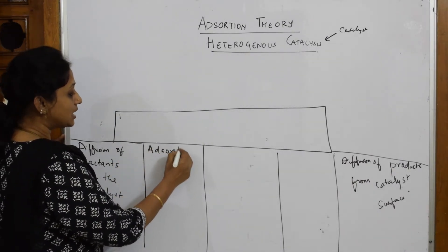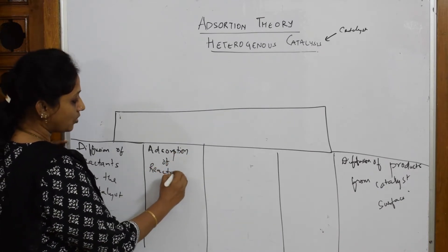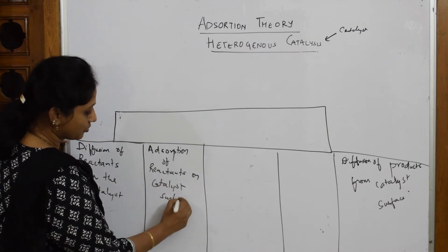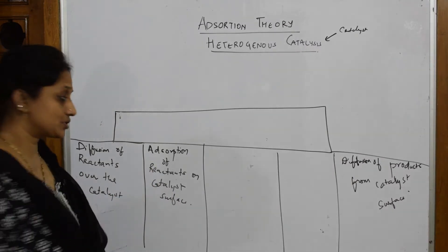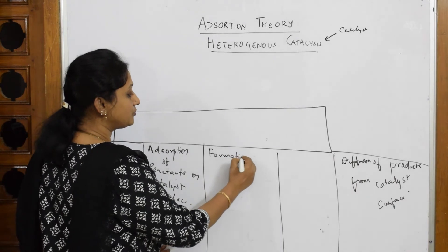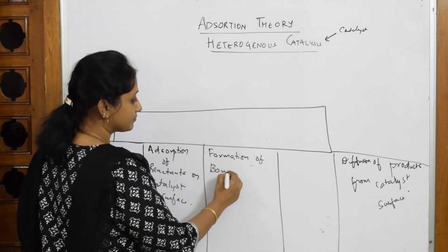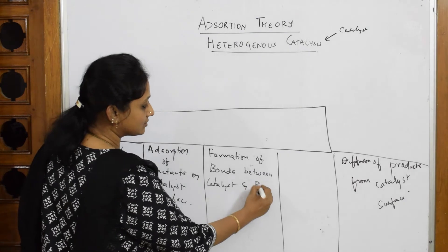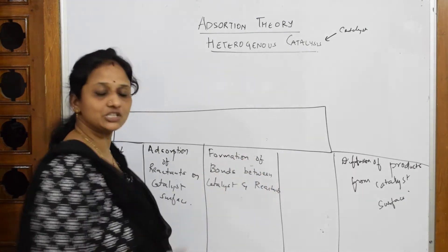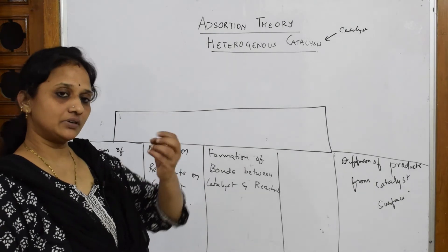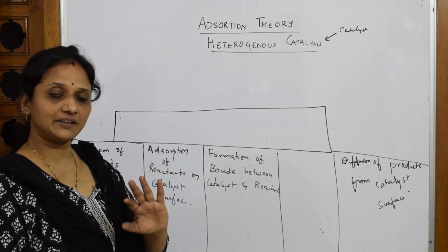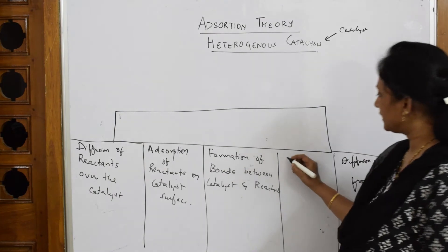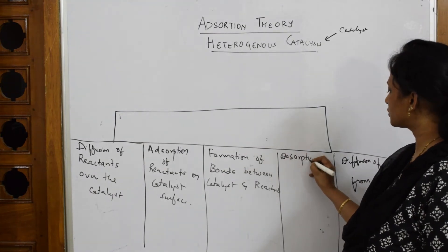After diffusion, the next step is adsorption — adsorption of reactants on the catalyst surface. After adsorption, the next important step is formation of bonds between the catalyst and the reactants. This is because we are dealing with heterogeneous catalysis, where the physical states of reactants and catalyst are different. After bond formation, the next step is desorption of products.